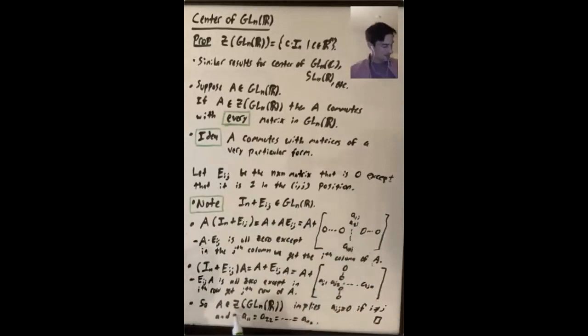If A is in the center of GLnR, these two matrices have to be equal to each other, which means everything except the diagonal entry where these intersect has to be zero. And when these things intersect, you have to have the same thing in both of these matrices. So what this shows is that Aij is zero if i is not equal to j, and all of the diagonal entries, A11, A22, up through Ann, these all have to be equal to each other.